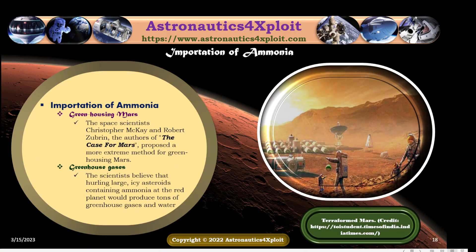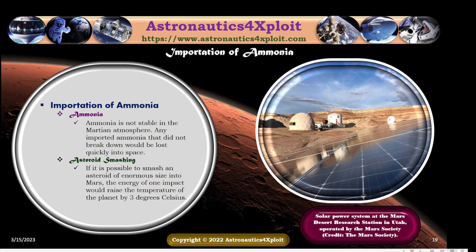Space scientists Christopher McKay and Robert Zubrin, the authors of The Case for Mars, proposed a more extreme method for greenhouse warming on Mars. The scientists believe that hurling large icy asteroids containing ammonia at the red planet will produce tons of greenhouse gases and water. Ammonia is not stable in the Martian atmosphere, and any imported ammonia that does not break down will be lost quickly into space. If it is possible to smash an asteroid of enormous size into Mars, the energy of one impact will raise the temperature of the planet by 3 degrees Celsius.